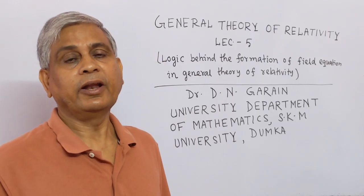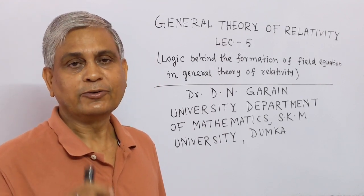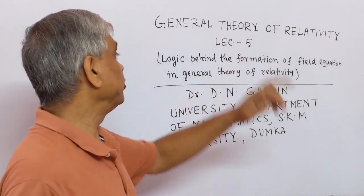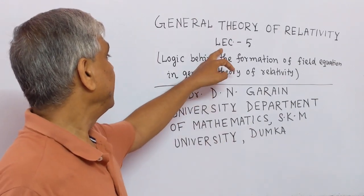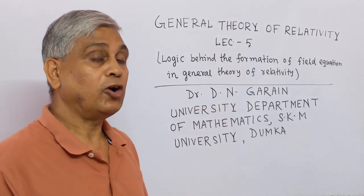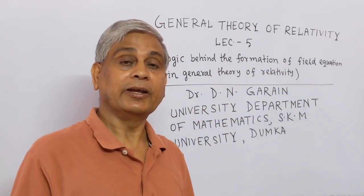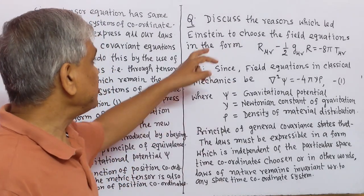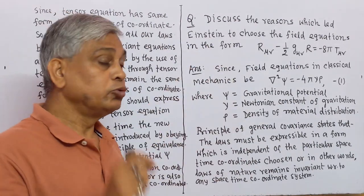Namaste to everyone. I welcome you all to my YouTube channel. Today I will deliver lecture number five on the General Theory of Relativity, in which I have given the logic behind the formation of the field equation. I will now solve a question: discuss the reasons which led Einstein to choose the field equations.